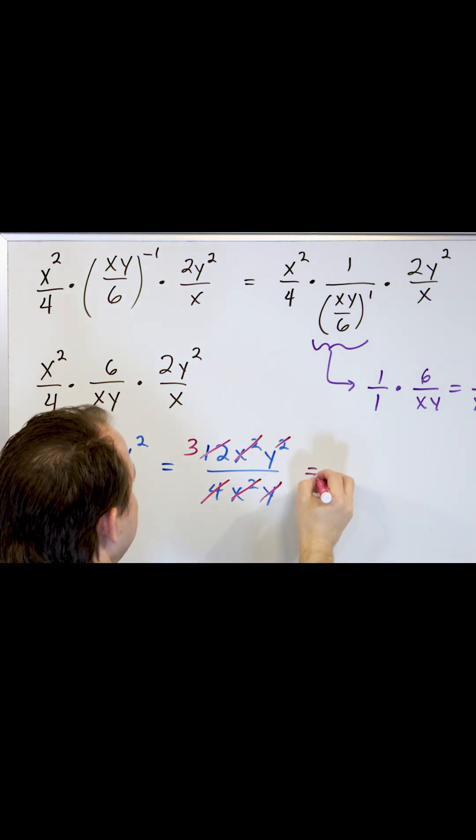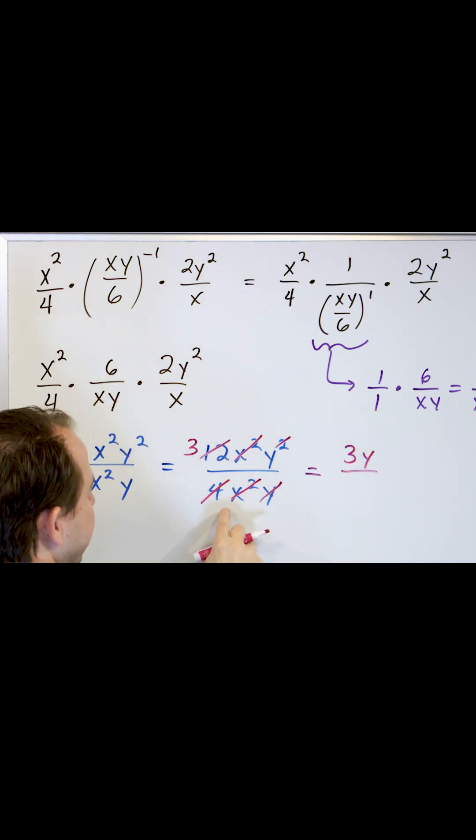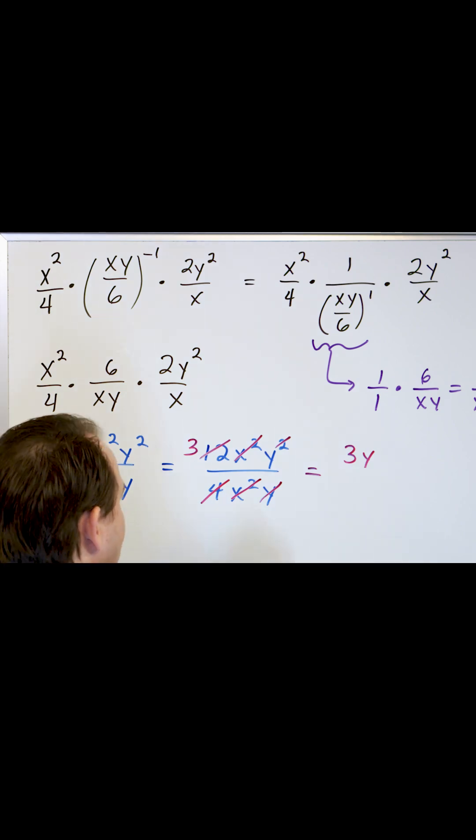So what I have is three times the y, and on the bottom I have nothing at all. So it's over one, so I can basically just erase it and make it three y. That's the final answer.